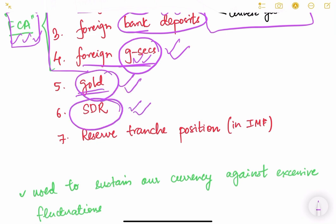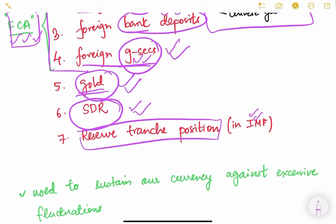Beyond FCA, the other components of forex reserves are gold, Special Drawing Rights (SDR), and the Reserve Tranche Position in the IMF.